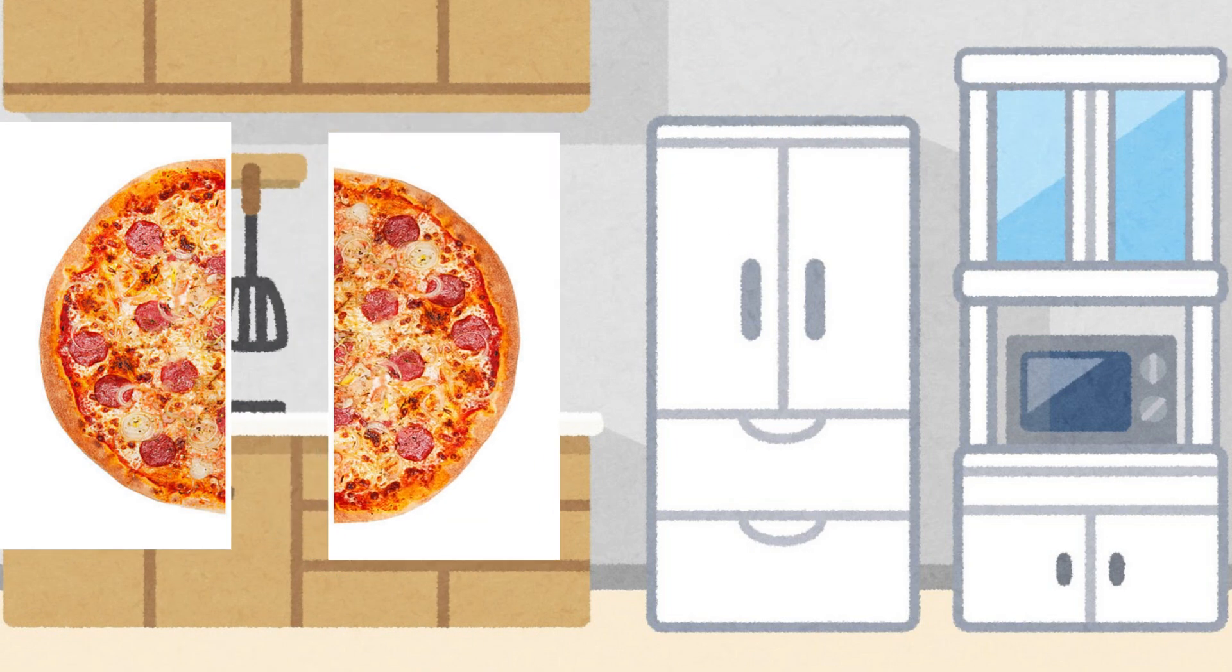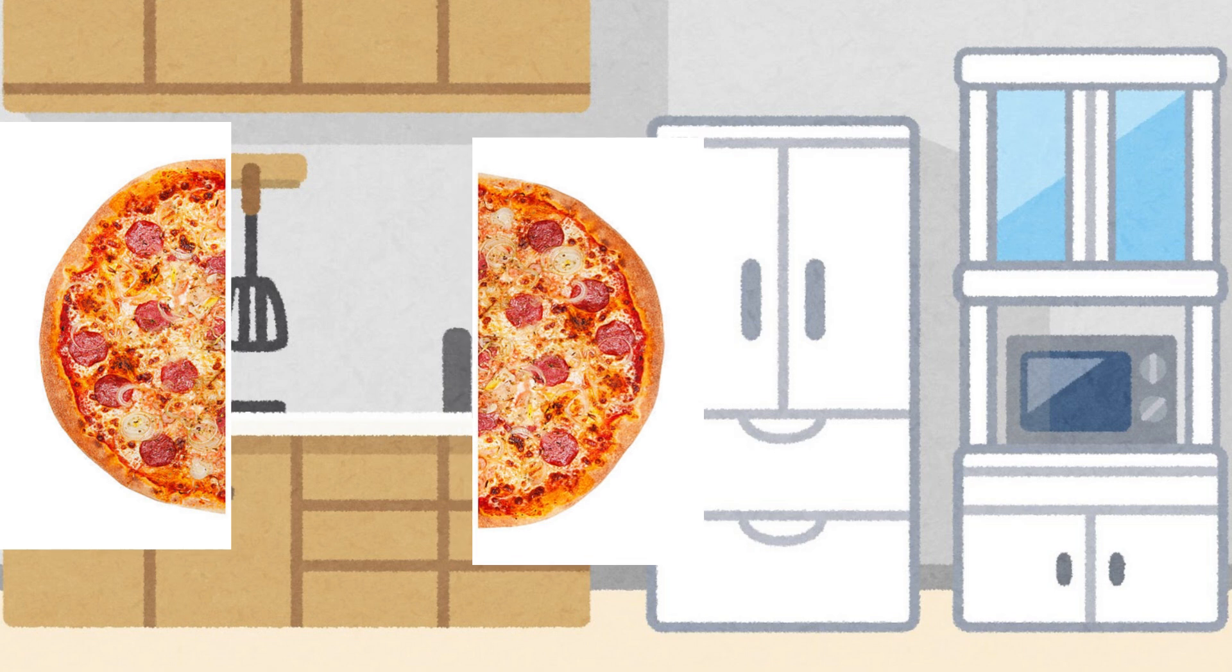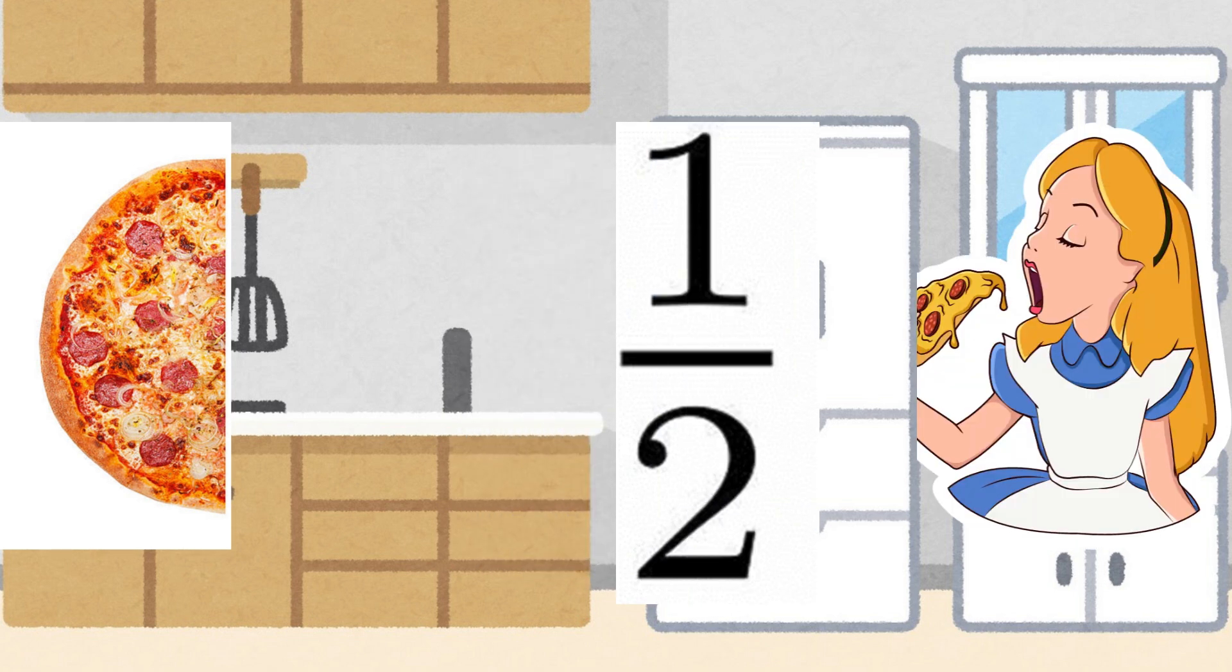Pizza 1. Anella cuts her pizza into two equal parts and eats one part. The eaten fraction is one over two.